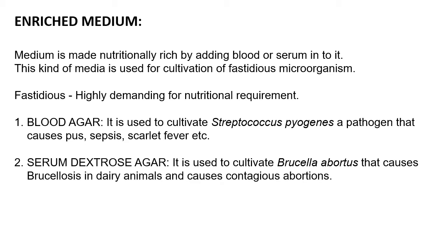First is enriched medium. Enriched medium is made nutritionally rich by adding blood or serum into it. This kind of media is used for cultivation of fastidious microorganisms — those which are highly demanding in their nutritional requirements. For example, if you have a fastidious culture, it requires blood in the medium to grow; if blood is not available, that particular microbe cannot grow.